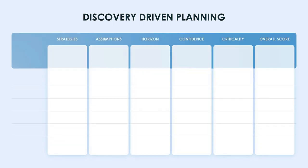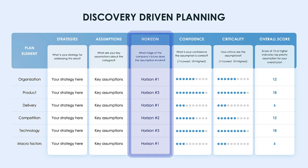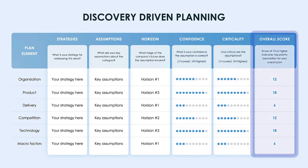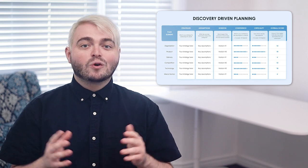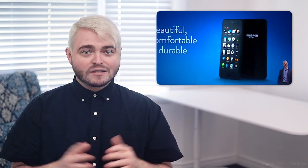Discovery-driven planning is a tool used to carefully tread the water without burning out. This table organizes growth plans across the key strategies to employ, the assumptions they'll operate on, the horizon — either near, mid, or long term — to manage current and future growth opportunities, the level of confidence in the plan element, and how critical the assumptions are to the goal. Add these up to get an overall score, with a score over 15 being top priority to move forward. The goal is to not run out of resources before you find the right radical idea. The creator of this framework developed it based on a list of failed projects where untested assumptions were taken as fact, costing organizations at least $50 million each.